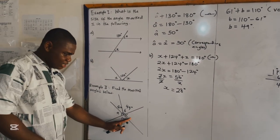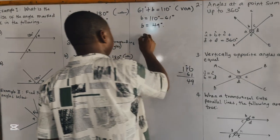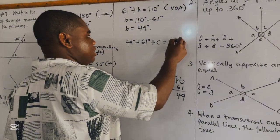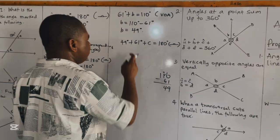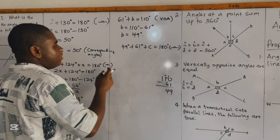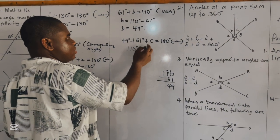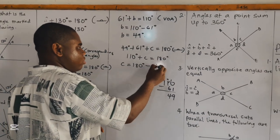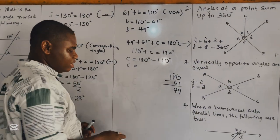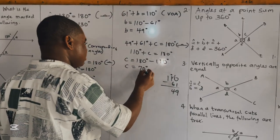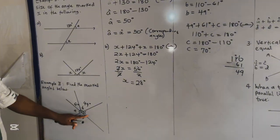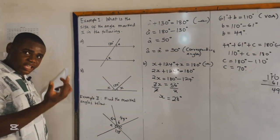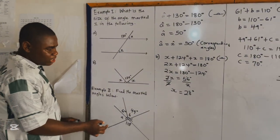Since B is 49 degrees, and this is an angle on a straight line, we have 49 degrees plus 61 degrees equals 110 degrees. So C equals 180 degrees minus 110 degrees, which gives C equal to 70 degrees. To verify: 70 plus 110 equals 180 degrees, confirming the sum of angles on a straight line.